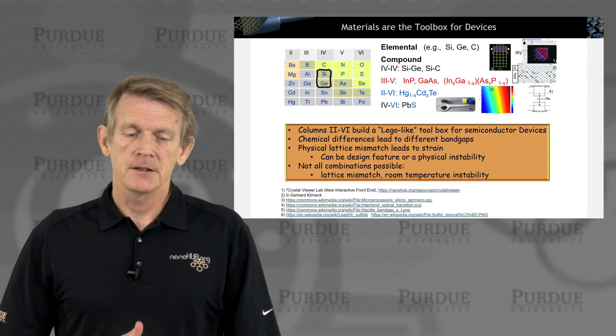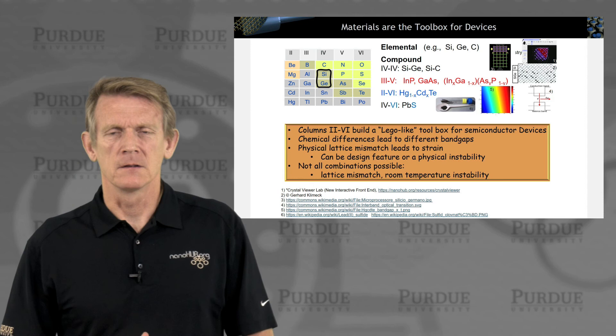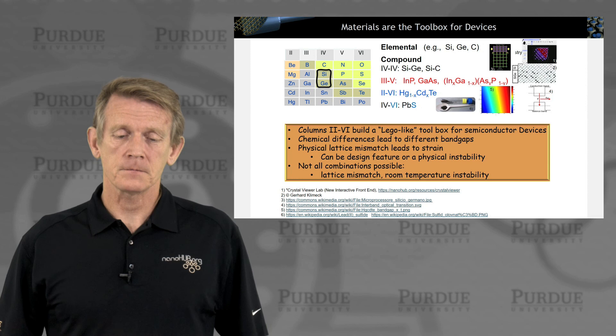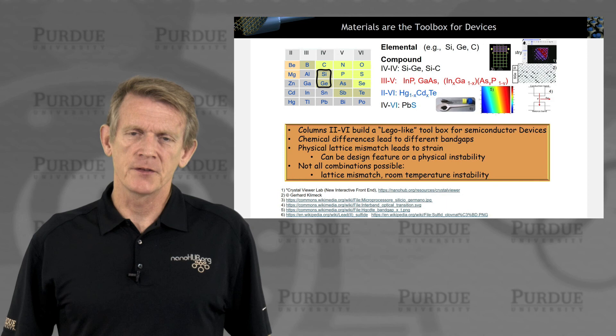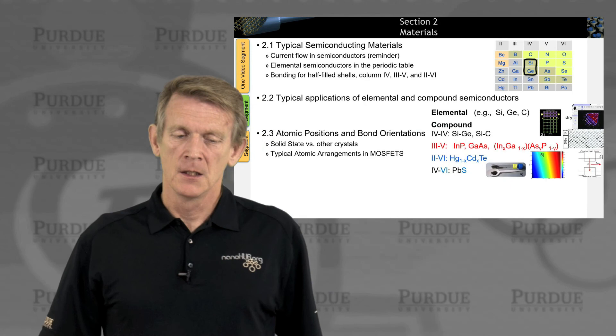What you have is really a materials toolbox — a Lego box, if you like — that you can use to build semiconductor devices. You utilize chemical differences that lead to different band gaps or different mobilities, and you can compose new systems that wouldn't occur in nature. Not all combinations are possible due to strain considerations, lattice mismatch, or room-temperature instability, and they serve different application purposes. With that, we're concluding this section on typical semiconductor applications as a rapid overview. In the next section, we'll be talking about atomic position and bond orientation.